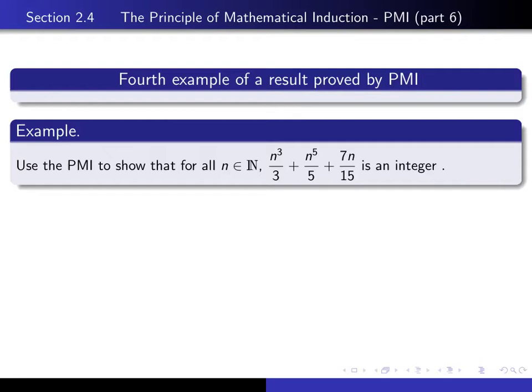Here's the result that we're going to prove. We're going to show that for every natural number n, if we take this quantity, n³/3 + n⁵/5 + 7n/15, that that actually comes out to be an integer. And we're going to do that proof using the principle of mathematical induction.